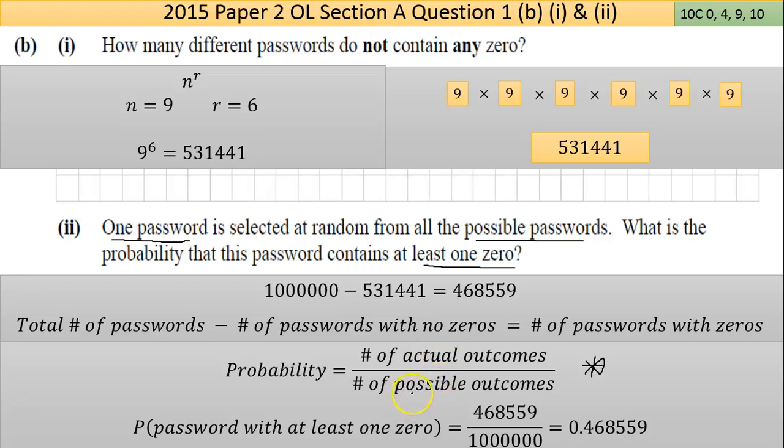So the probability of a password with at least one zero is the number of things that can happen, which is 468,559 divided by the number of things that could happen, which is a million. That's just moving the decimal point across six places, so you end up with 0.468559. They don't say they want that rounded, but 0.46 is probably as much as you need. But I would always give the full answer that's displayed on the calculator.